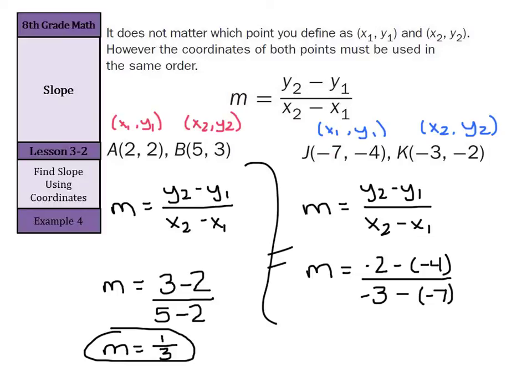Now this is where our integer skills come in handy. And again, whether it's your first integer problem or your last, always keep change opposite when you're subtracting. It can really help you out. So we'll keep the negative 2, change the subtraction to addition, and the opposite of negative 4 is a positive 4. And divide that by keep the negative 3, change the subtraction to addition, and the opposite of negative 7 is a positive 7.